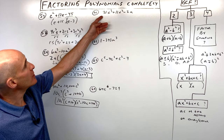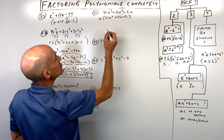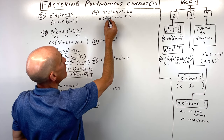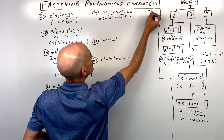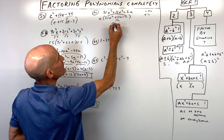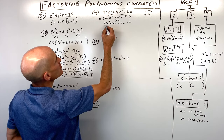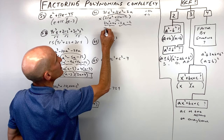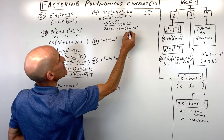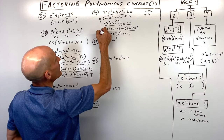Number sixty-one: the only GCF is x. Factor that out to get x times 21x squared plus 11x minus 2. This is a trinomial with leading coefficient not 1. Using AC: 21 times negative 2 is negative 42. What multiplies to negative 42 but adds to positive 11? That's 14 and negative 3. Split the middle term into 14x and negative 3x. Bring down the first and last terms. Factor by grouping, then factor out 3x plus 2 to get 7x minus 1. Don't forget the x factored out initially.